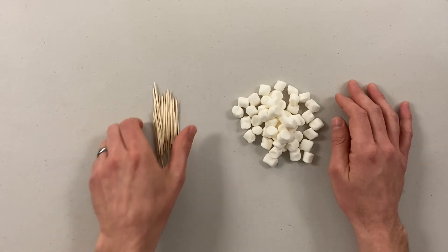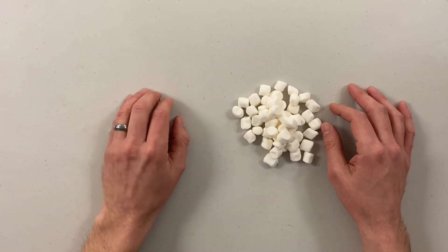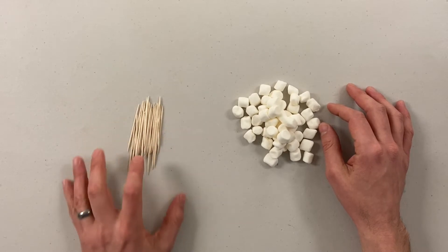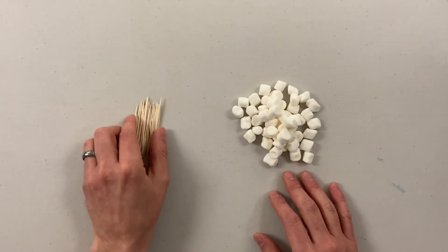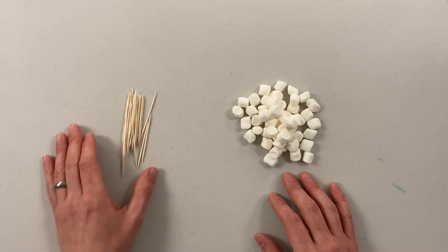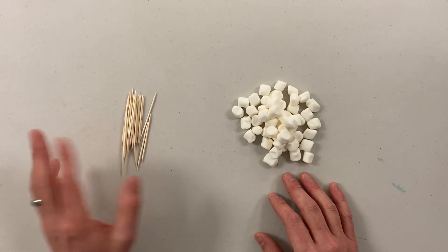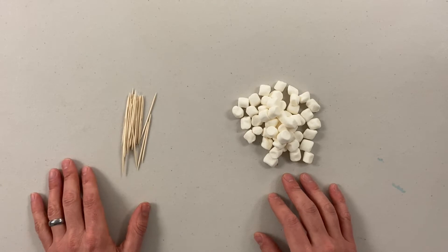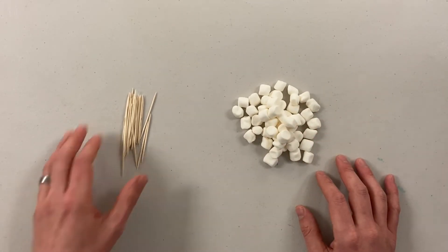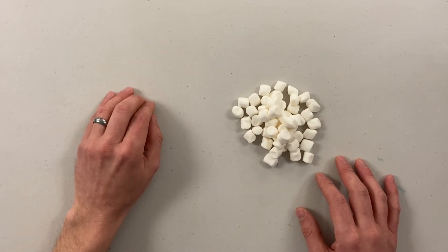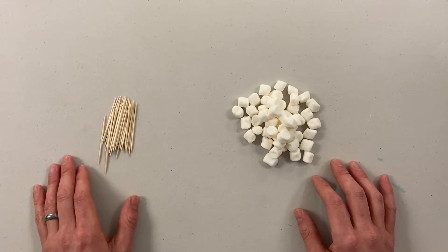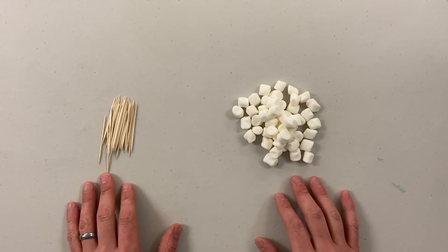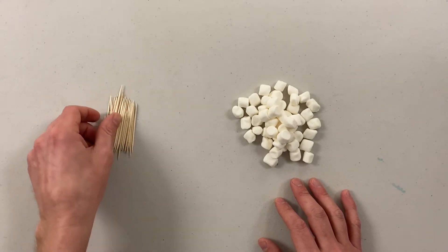Okay, so it is building time, and we have here some toothpicks and some marshmallows. I'm using about 38 to 40 toothpicks and approximately 50 marshmallows. You can use more, you can use less. If you are using one of the kits from the library, this is about exactly what you have had provided for you.